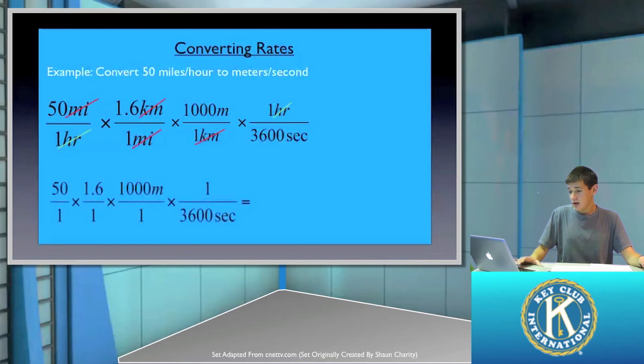So ultimately, what we end up with is we end up with the following. We end up doing 50 times 1.6 times 1,000 and dividing that by 3,600, giving us a final answer of 22.22 meters per second, which is the units that we want.